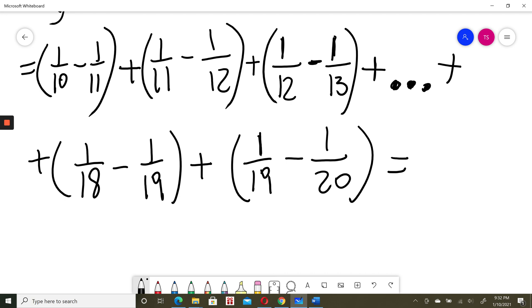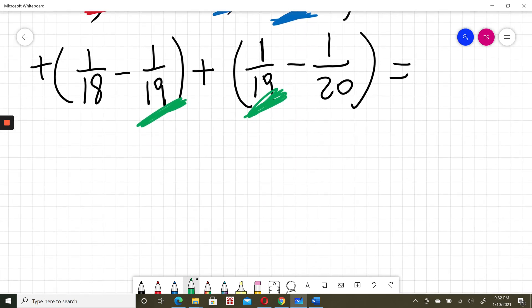Now I can watch this. I have negative 1 over 11, positive 1 over 11. I have negative 1 over 12, positive 1 over 12. As well, I have negative 1 over 19, positive 1 over 19. So I will group those things a different way.